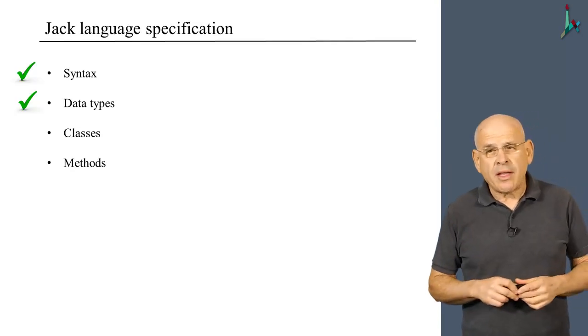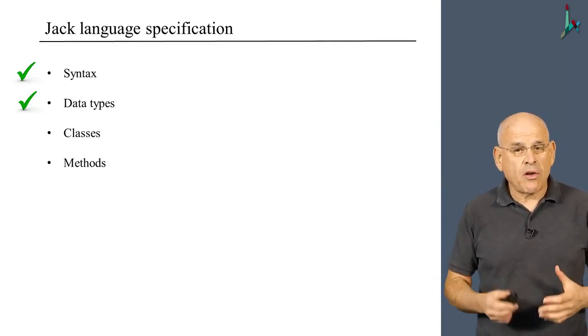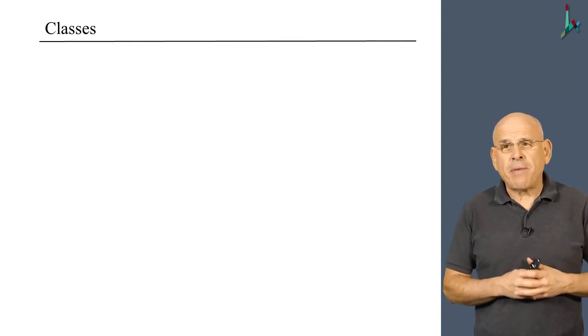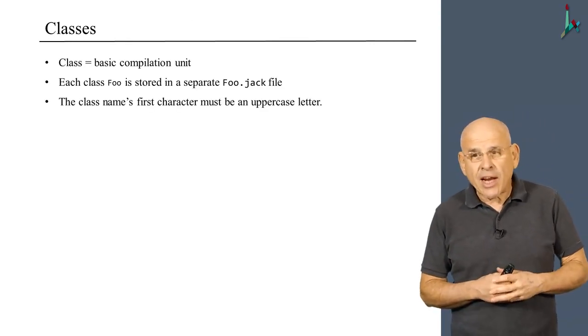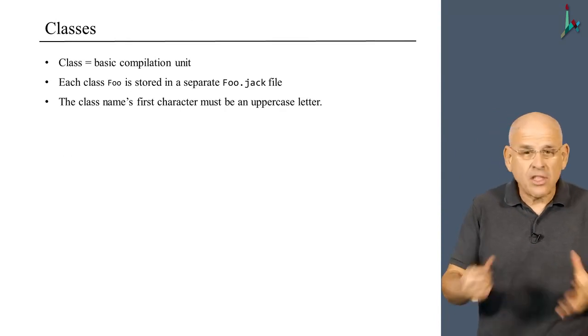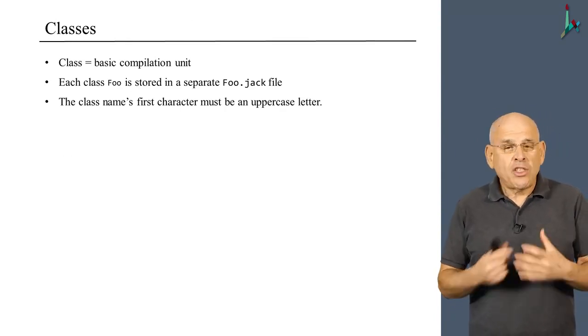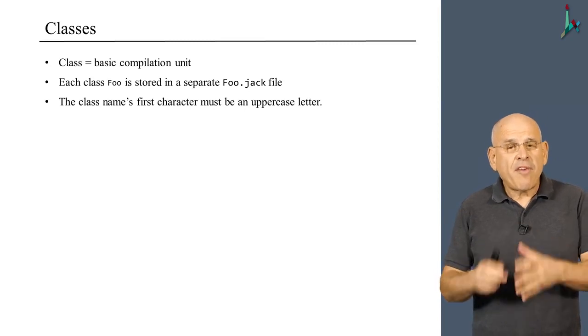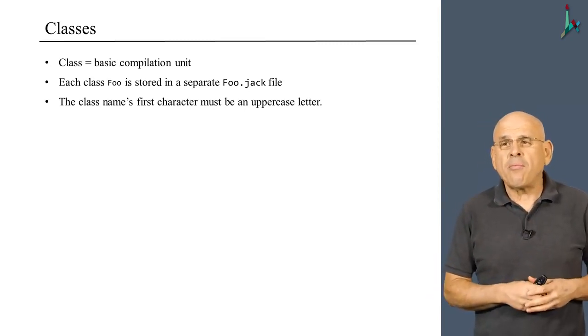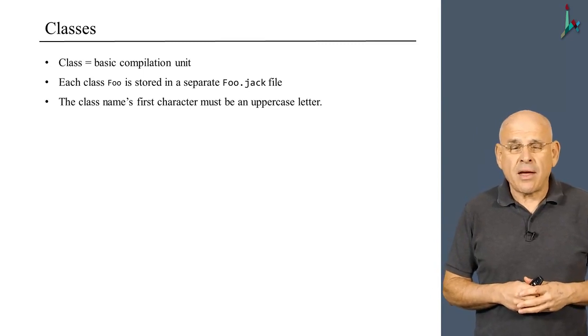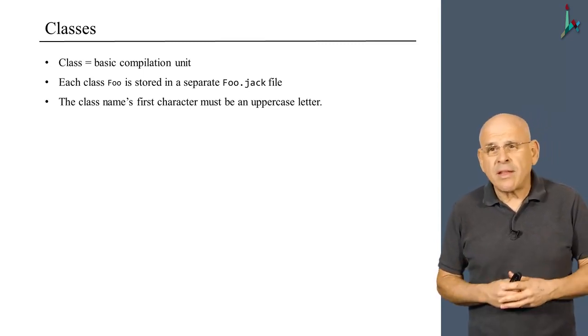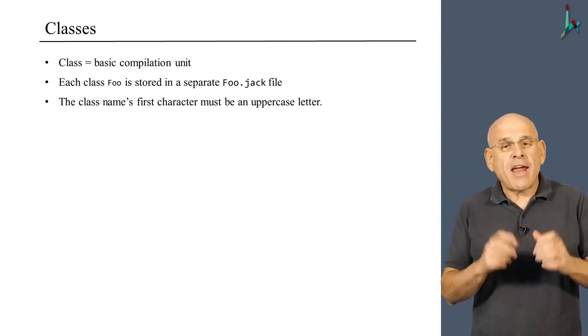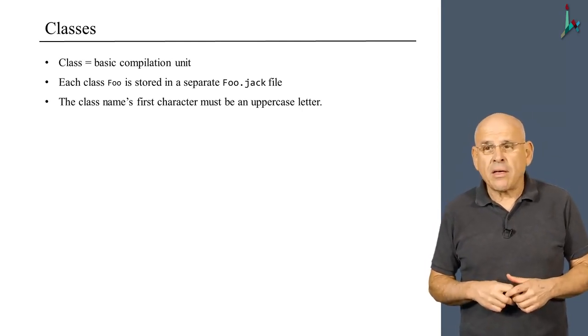The next thing that we will explore in the Jack language specification is the notion of classes. The class is the most fundamental and basic compilation unit in the Jack language, likewise in Java, C-sharp, C++. Each class named foo is stored in a separate Jack file, and this file is compiled separately from all the other class files in your application. We require that the class name will be the same as the file name, and the first character in the class name and the file name will be an uppercase letter.